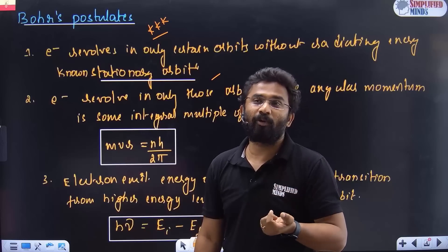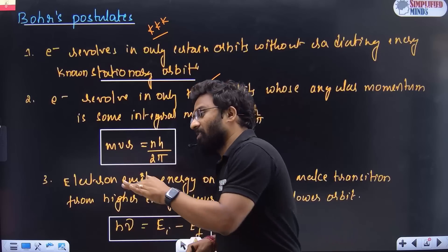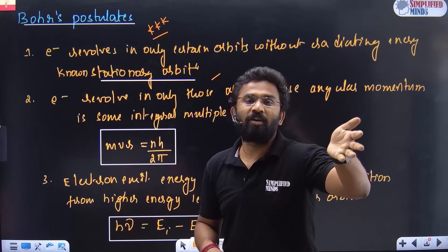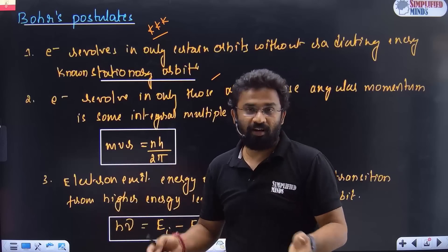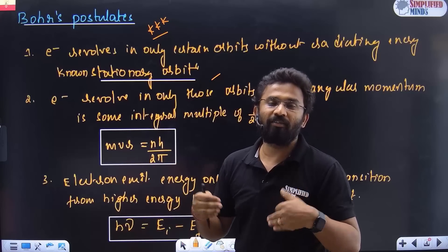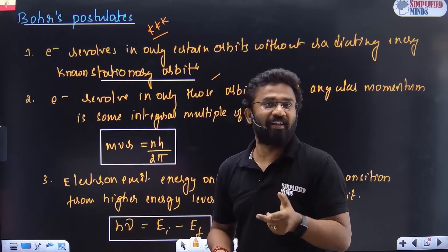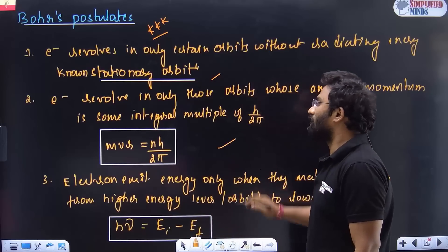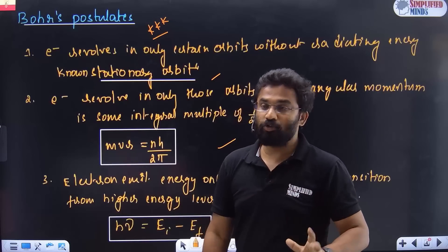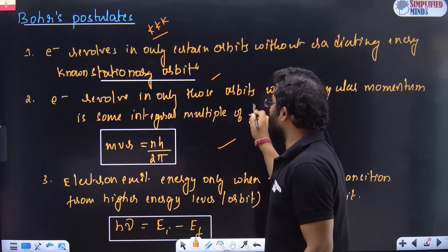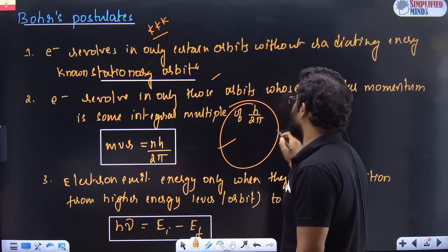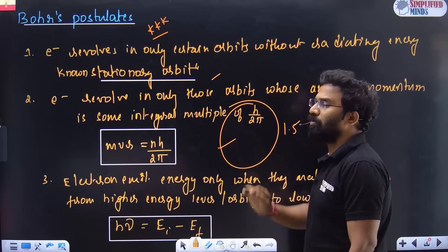Quantization means: you can climb one step, two steps, three steps — you can't climb 1.5 steps. You can have 5 apples but not 4.5 apples. Similarly, angular momentum must always equal nh by 2π — you can't have an orbit in which the angular momentum is 1.5 times this value.